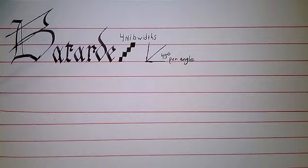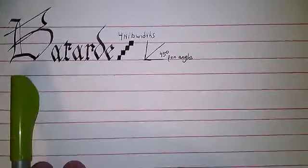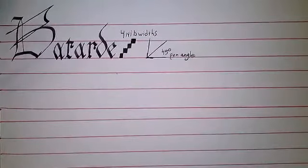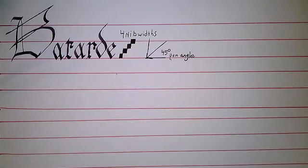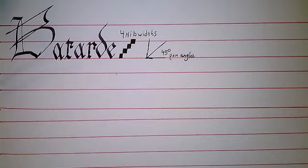Today we're going to focus on the minuscule script — meaning it has two different ways of writing letters: your capitals and your minuscules, or majuscules and minuscules depending on who you ask. We do this at four nib widths high at a 45-degree pen angle. I have not seen a batard consistently less than 40 degrees or more than 50 degrees. Some batards use less than four nib widths, and very ornamental batards go up to six or seven, but four nib widths is what I work with when teaching.